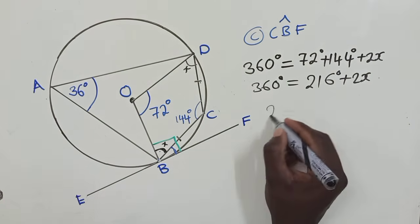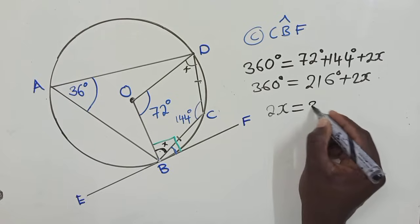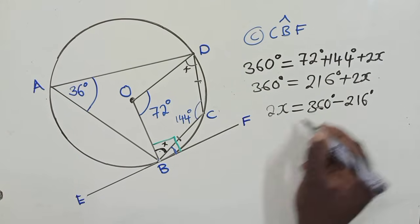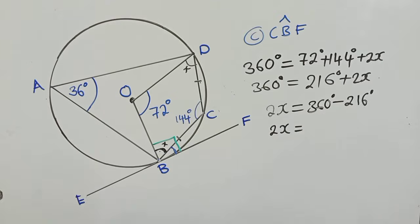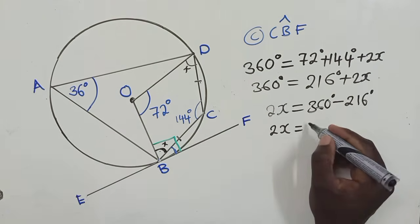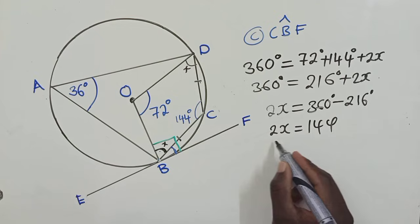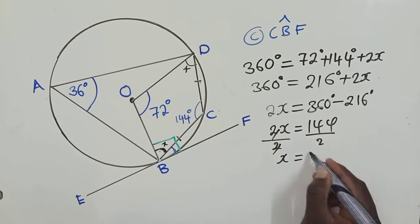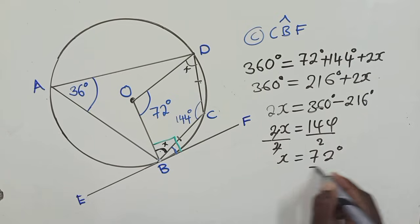So we group the like terms of 2x is equal to 360 minus 216 degrees. So 2x is equal to, we're solving, when we subtract 360 minus 216, we're getting 144. So this is 144. To solve for x, we divide by 2, so we get 72 degrees.